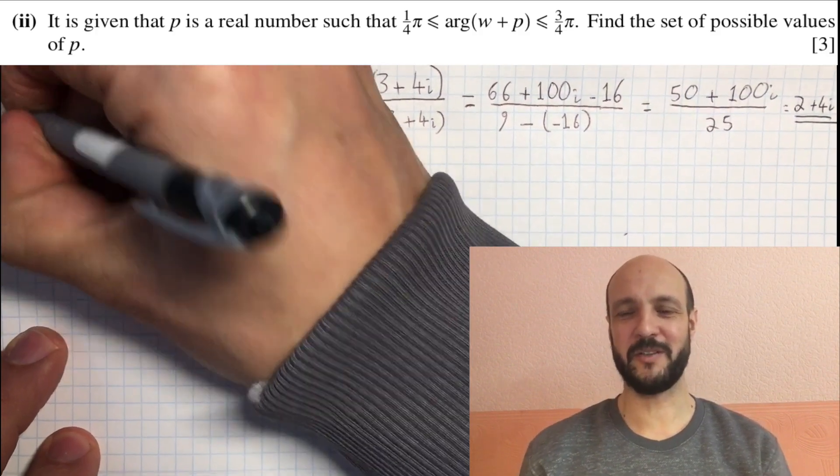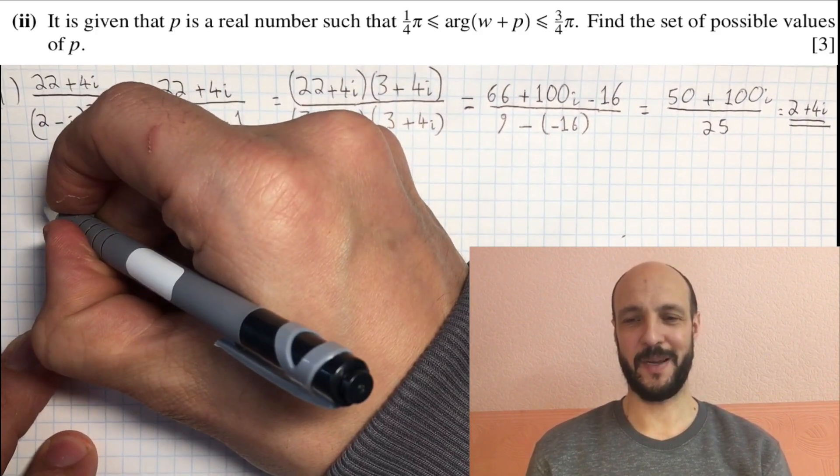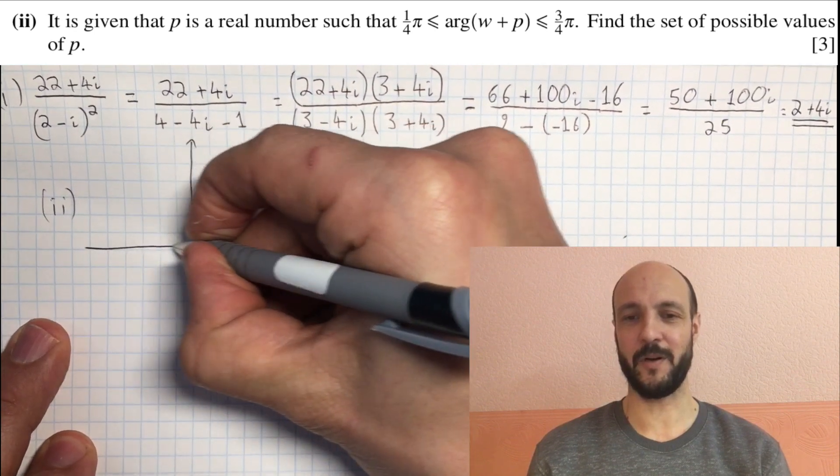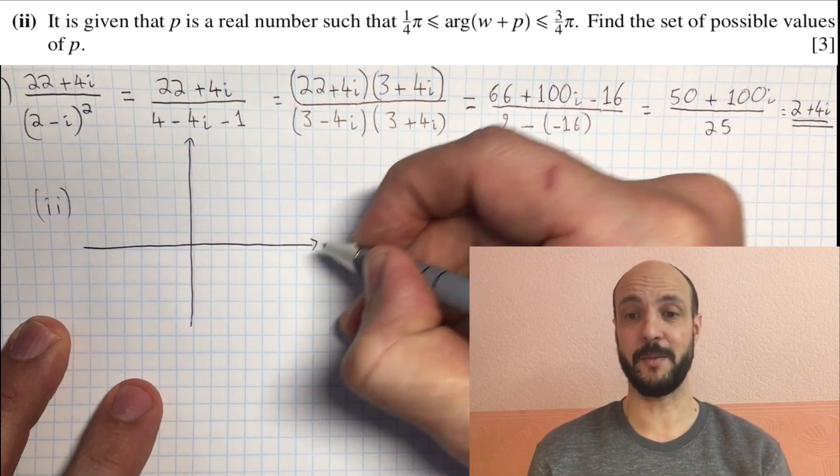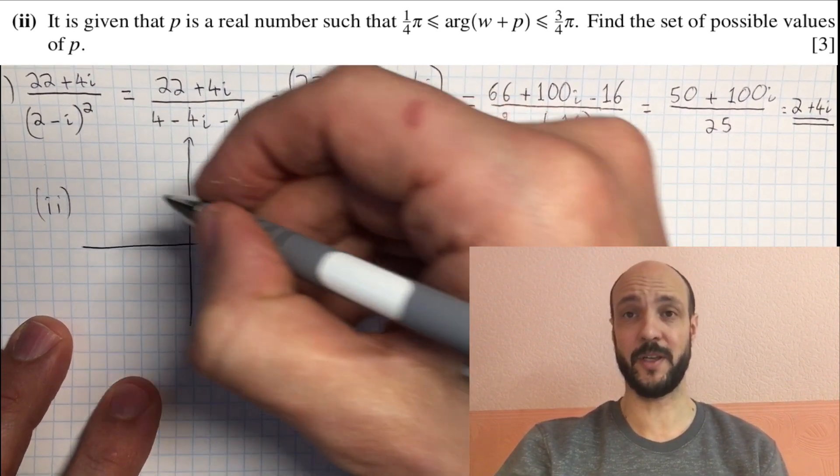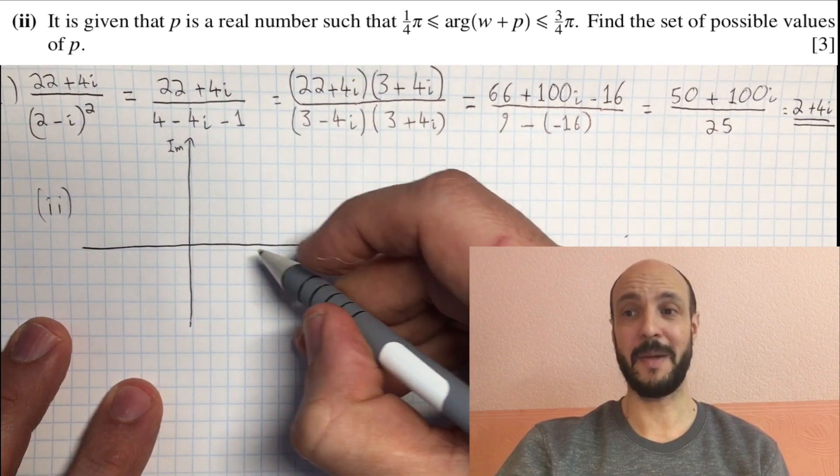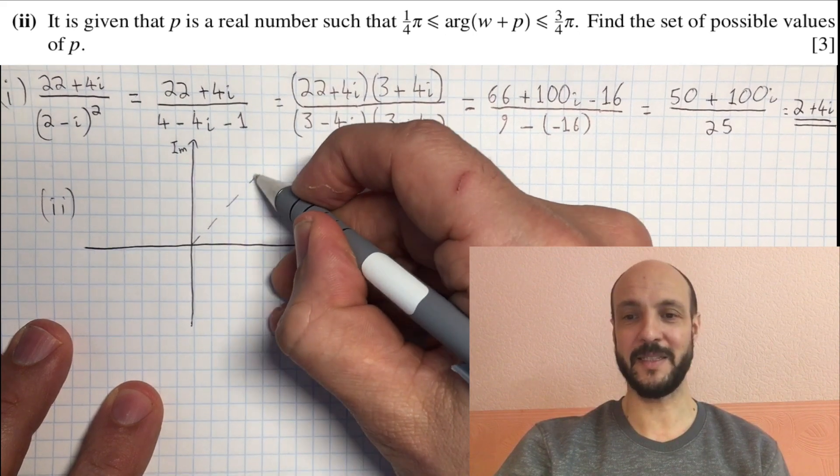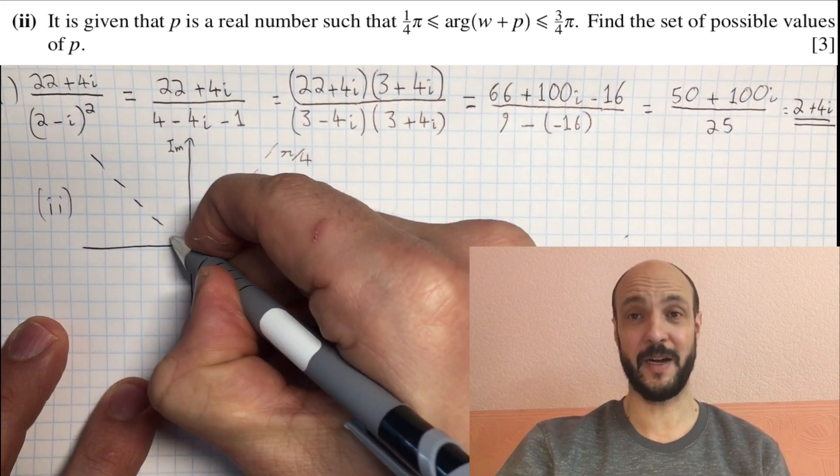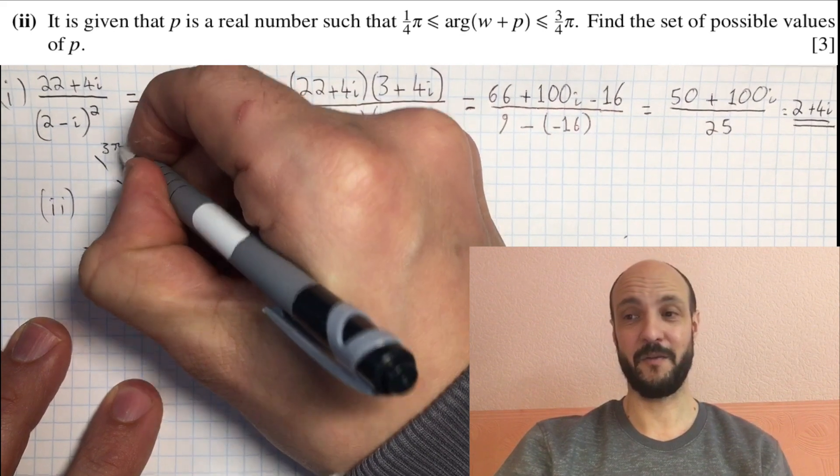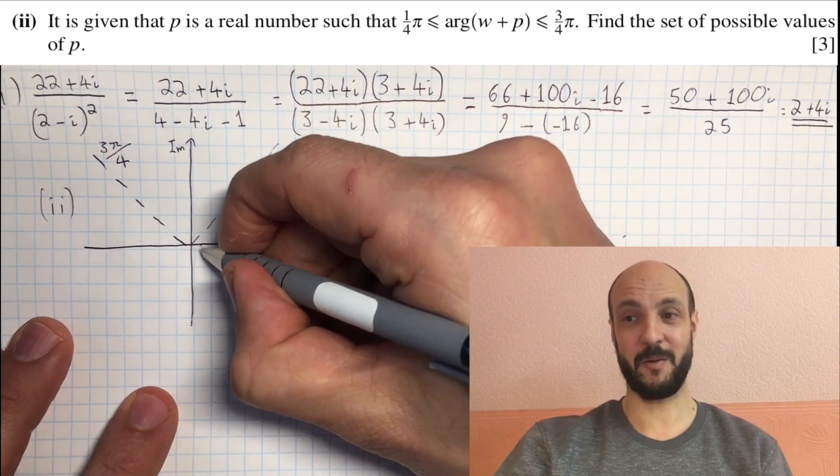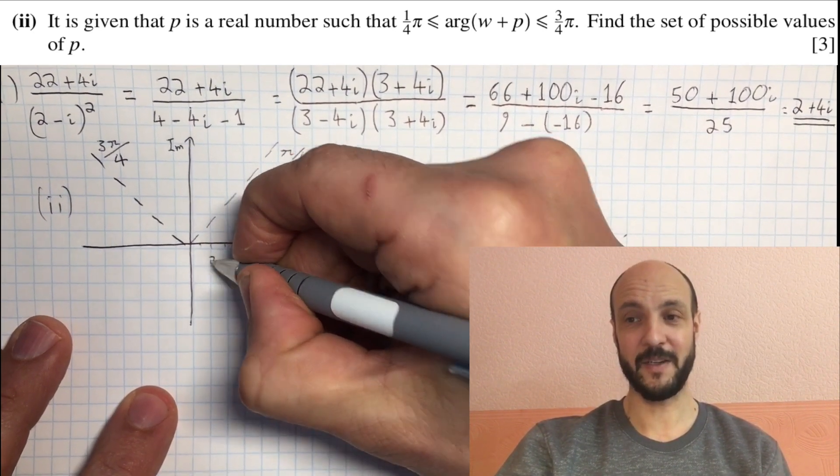So in the second part of our question, we're interested in the argument of the complex number. We've got this inequality that the argument of w plus p is between pi over 4 and 3pi over 4. And we're told that p is a real number. So the simplest way to approach this is to draw an Argand diagram, to draw the x-axis, the real axis, and the y-axis, the imaginary axis. And we think, well what does it mean to be between pi over 4 and 3pi over 4? Well on our Argand diagram, pi over 4, 45 degrees, is a diagonal line going from the origin up to the top right there.